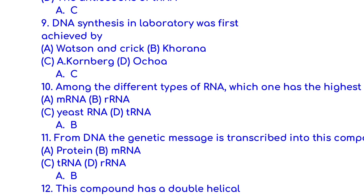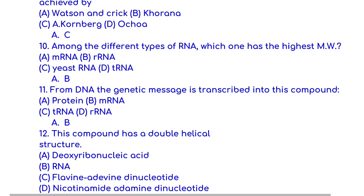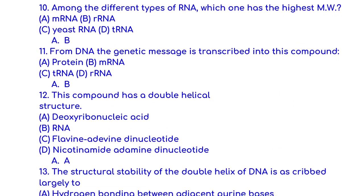Among the different types of RNA, which one has the highest molecular weight? rRNA has the highest molecular weight. Next one: From DNA, the genetic message is transcribed into this compound: mRNA.